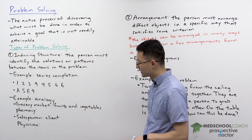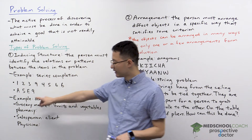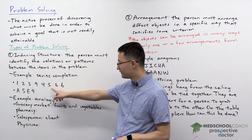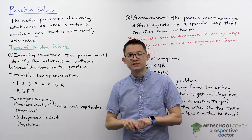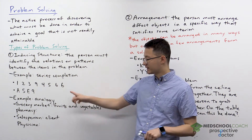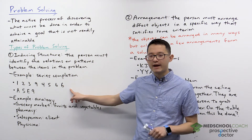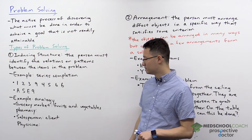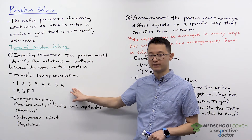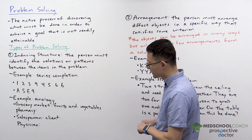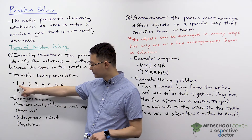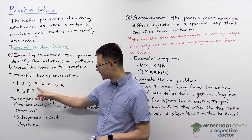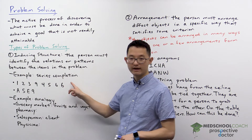Let's take a look at this first example. We have the numbers: 1, 2, 3, 9, 4, 5, 6, 6. The first thing you can do is try to look at these numbers and figure out what the pattern is. Once you figure out the pattern, you can think about what would be the next item.